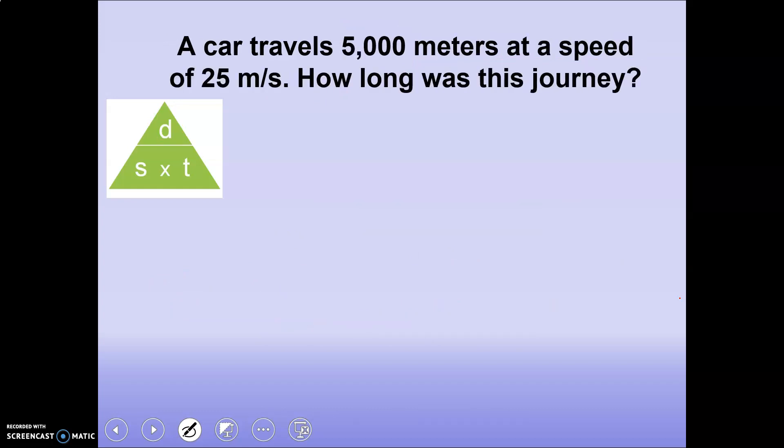All right, last one. So a car travels 5,000 meters. So we have a distance of 5,000 meters at a speed of 25 meters per second. How long was the journey? So how long, we're looking for time. So we know that time is equal to distance divided by speed.